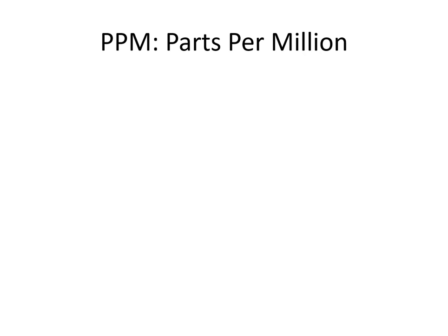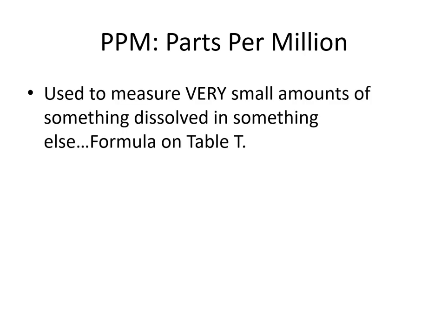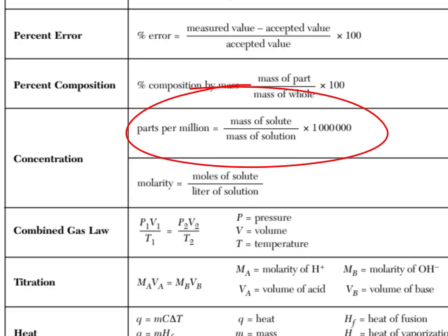Parts per million functions very similarly to a percentage but with one very critical difference. We generally only use parts per million when we are measuring very small amounts of something, and I mean very small amounts of something dissolved in something else. The formula for this is found on table T.